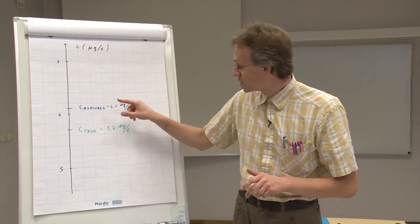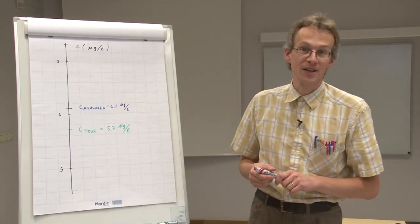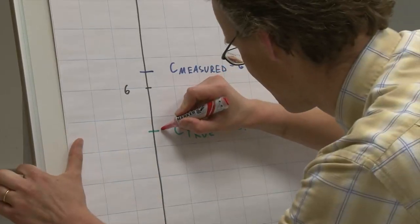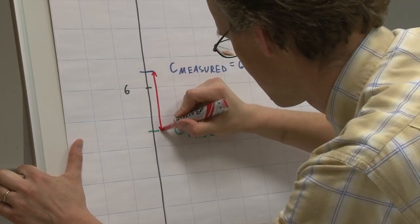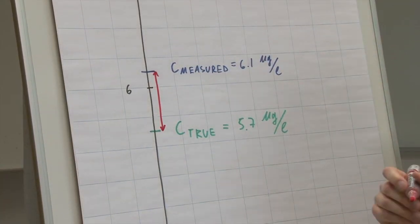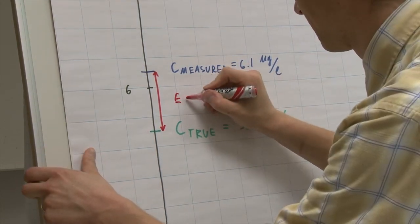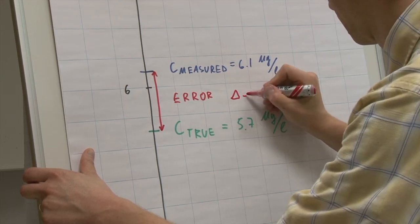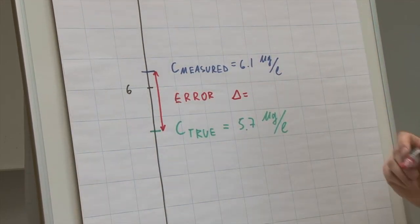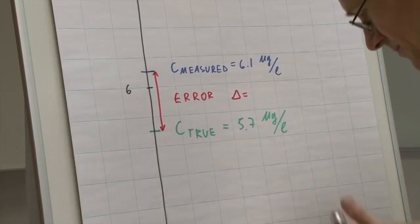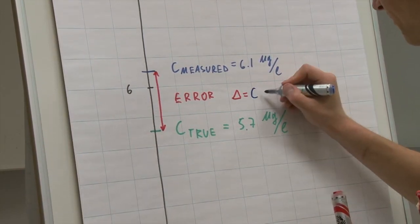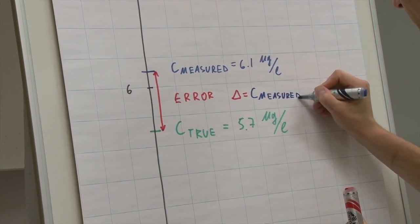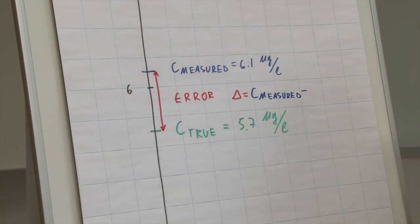Now, the difference between the true value and the measured value is called error. And we denote error by delta. And delta is equal to C measured minus C true.